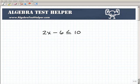So if you take a look at this problem, it's 2x minus 6 is less than or equal to 10. So what's the objective when we're solving an inequality problem?